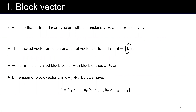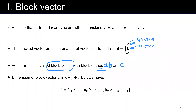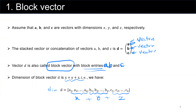Block vectors. Assume a, b, and c are three given vectors with dimensions x, y, and z. We can consider a stacked vector or concatenation of vectors a, b, and c, and represent it as d equal to (a, b, c). Vector d is called a block vector with block elements a, b, and c — each of which is a vector itself. The dimension of this block vector d is x plus y plus z, since a has x elements, b has y, and c has z.